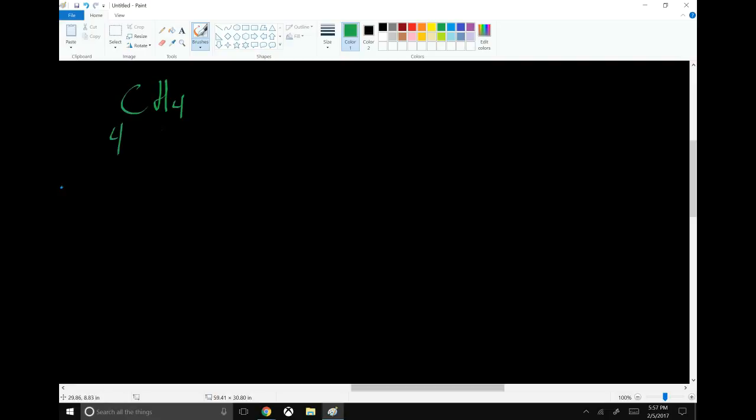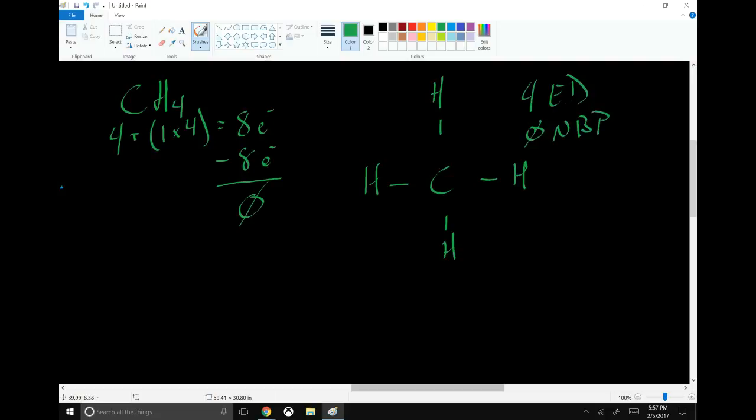So carbon gives us 4. Each hydrogen gives us 1. There are 4 of them. So that gives us a total of 8 electrons. Carbon bonds to each of the 4 hydrogens. That uses up all 8 electrons. And now we're happy. Because carbon has 8 electrons, hydrogen only needs 2. It's another exception.